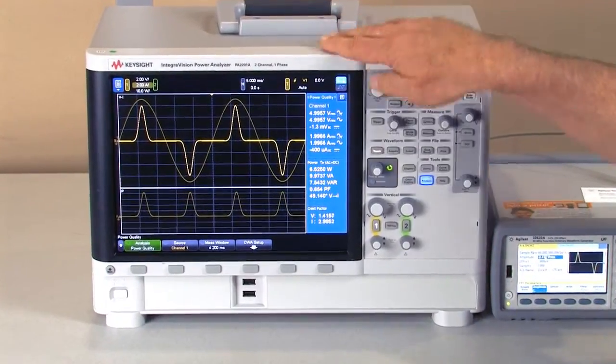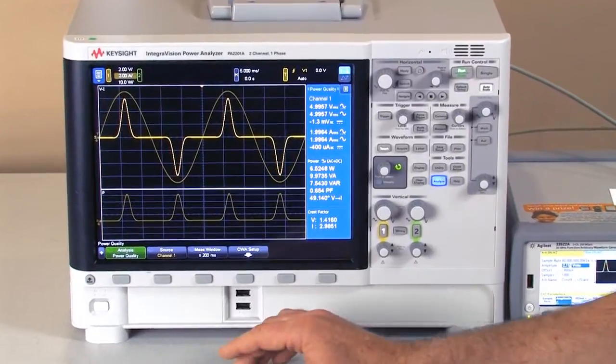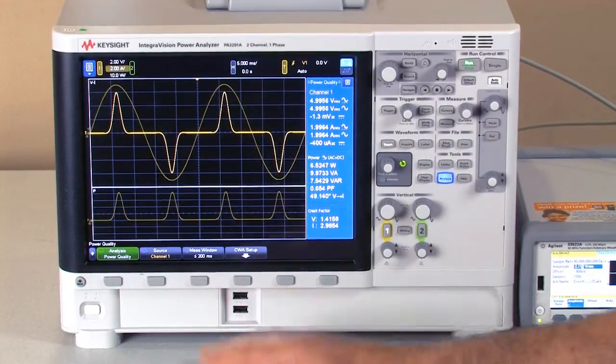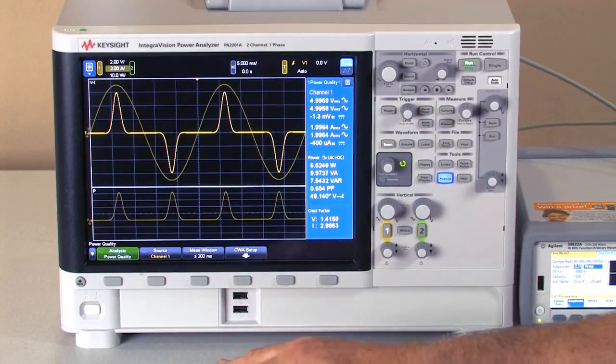Run those into channel 1 and you can see we have a normal sinusoid for the voltage channel and a very high crest factor for the current waveform.